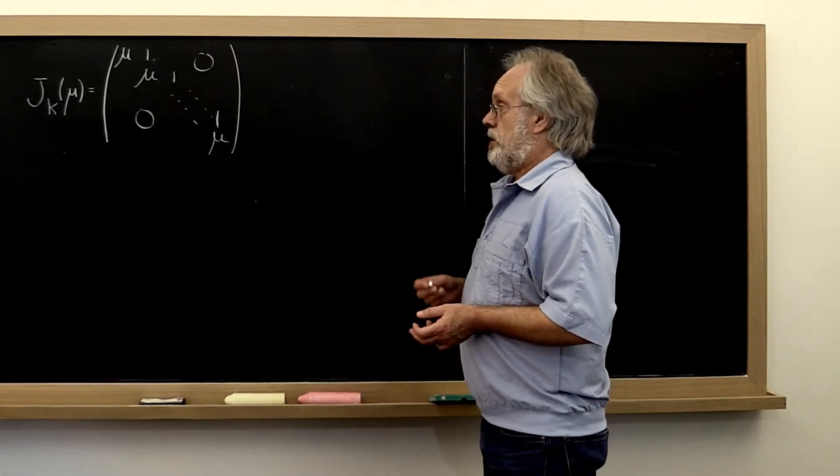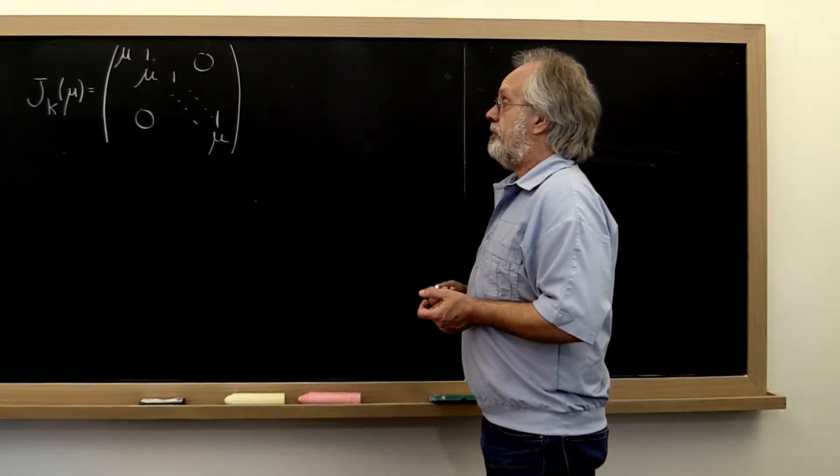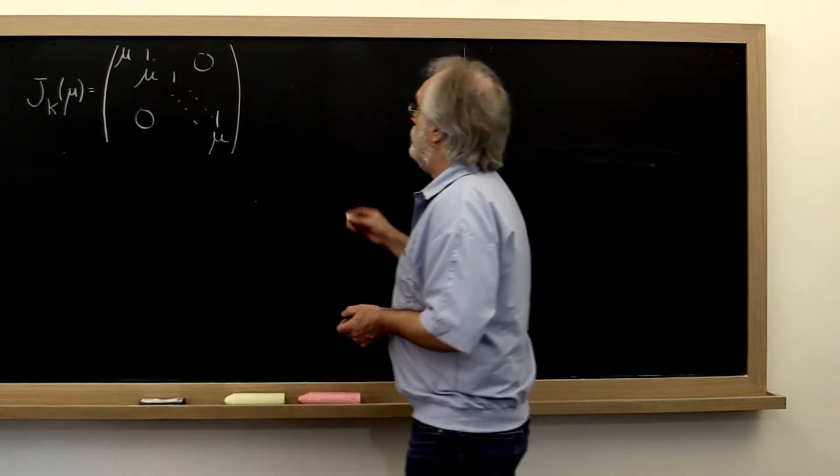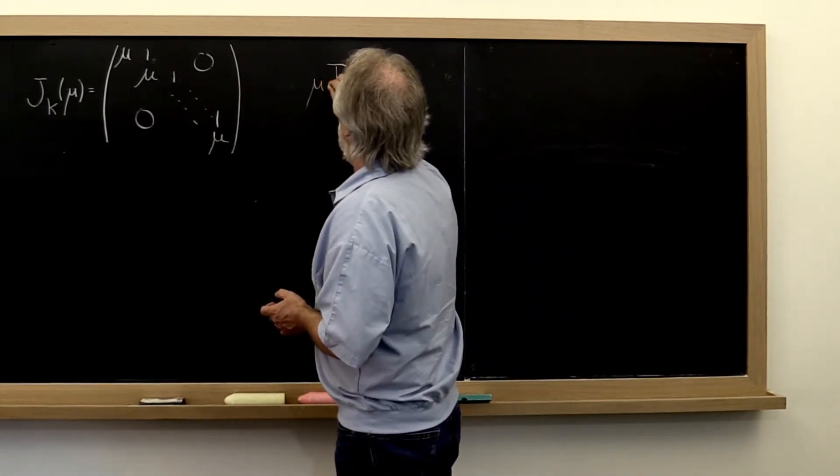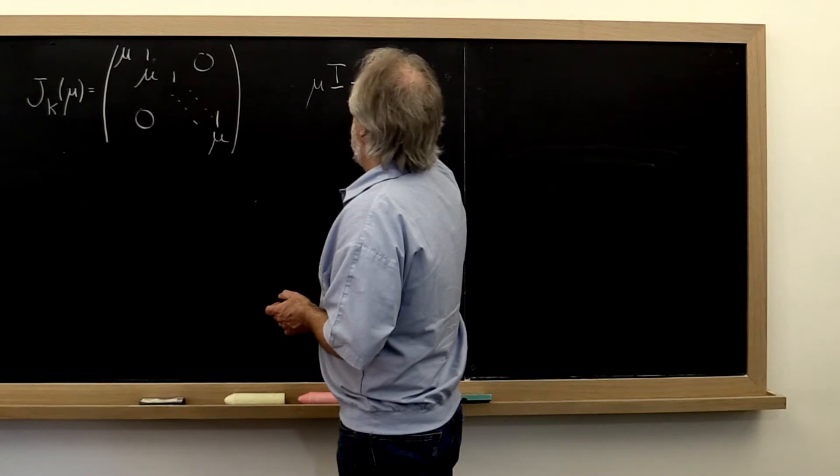Now how do we find the eigenvectors associated with mu? We look at mu times the identity minus the matrix A.